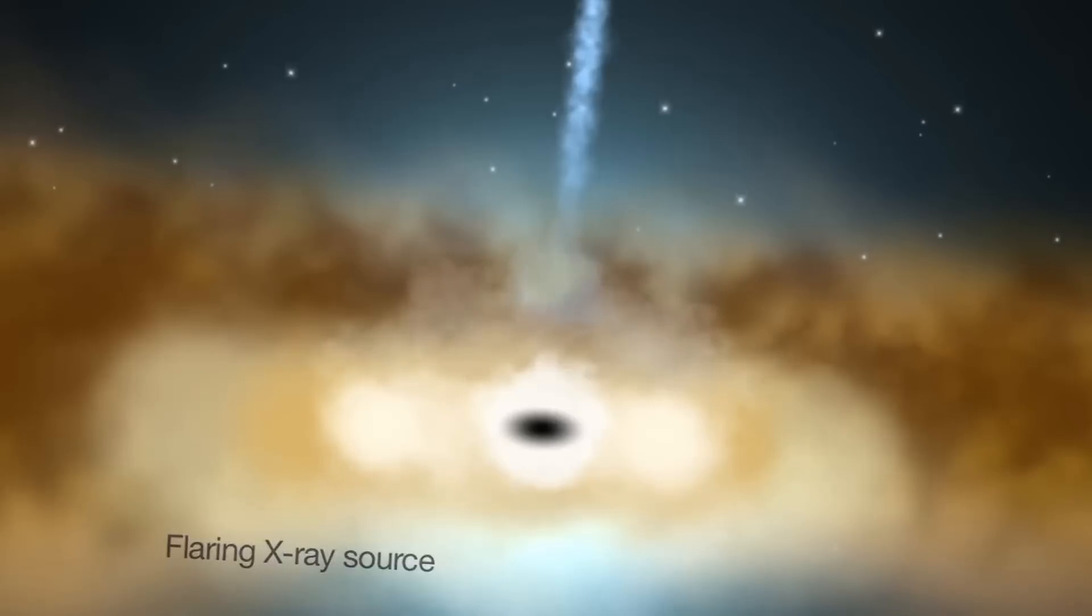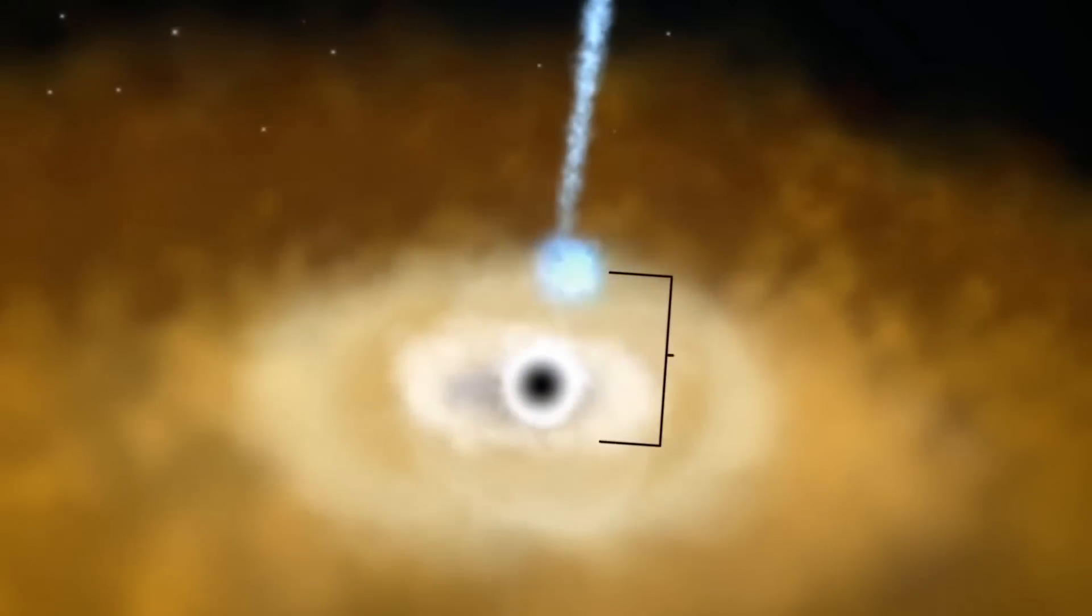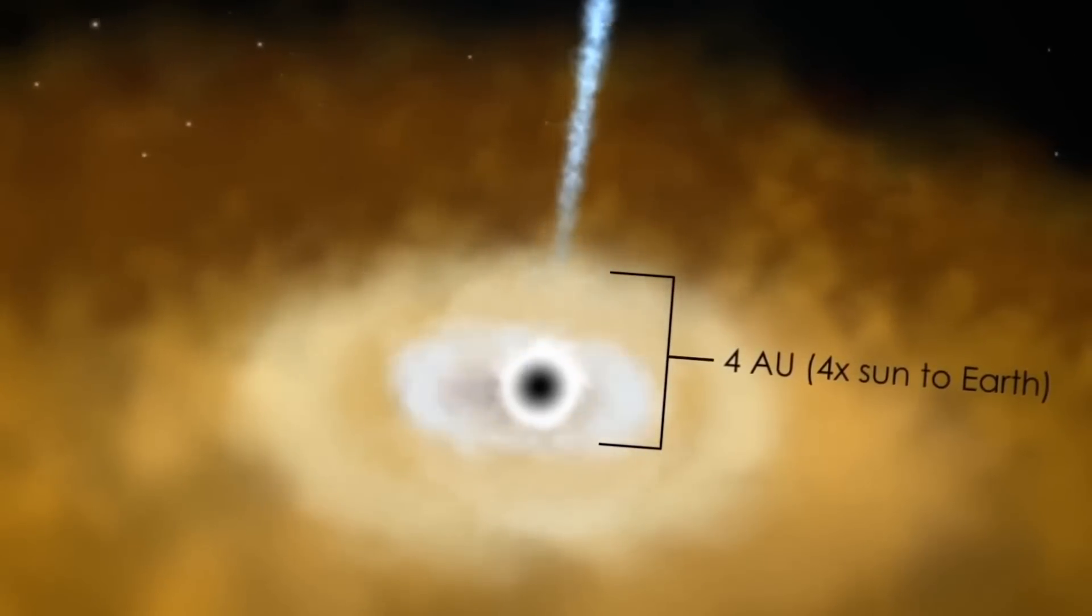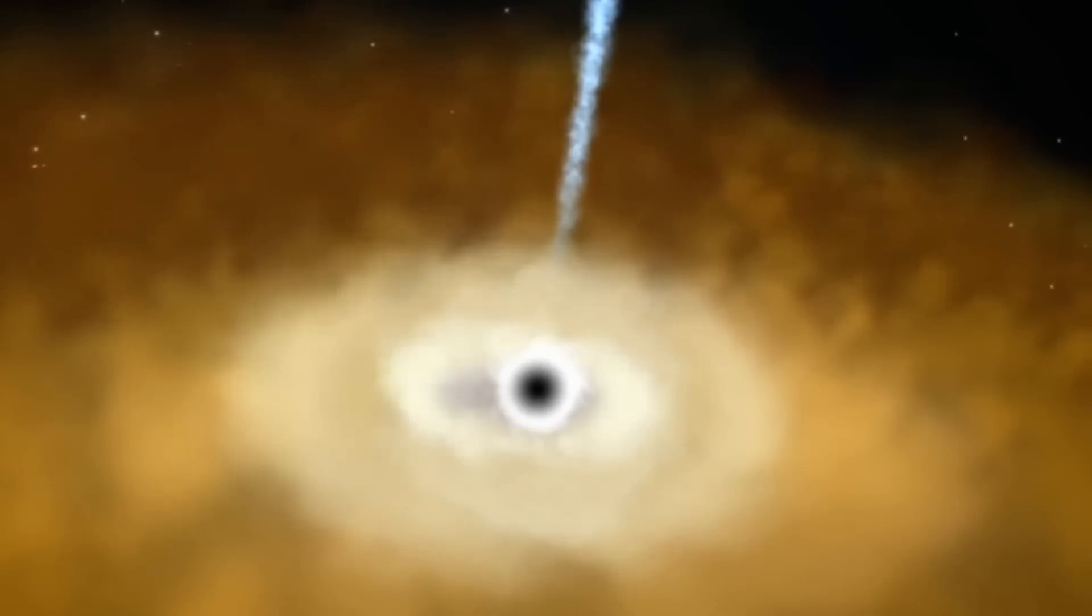While the holes themselves are dark, vast amounts of visible, ultraviolet, and X-ray light can be released as they suck in surrounding gas and matter. The light heats dust that cocoons the black hole, causing the dust to radiate infrared light.